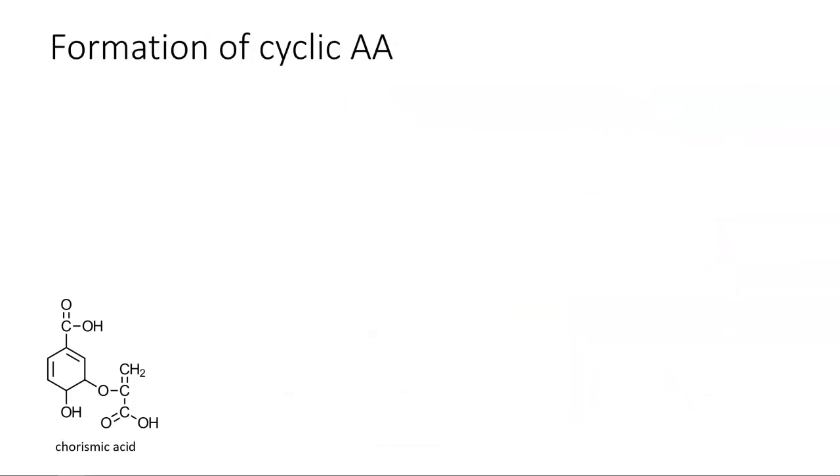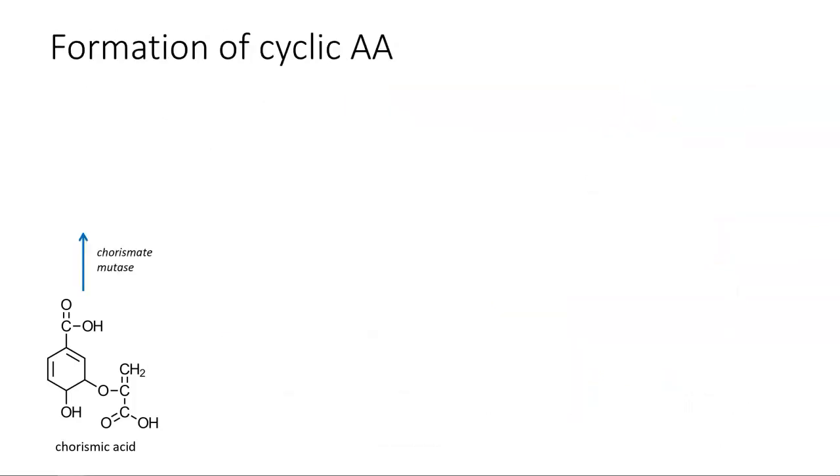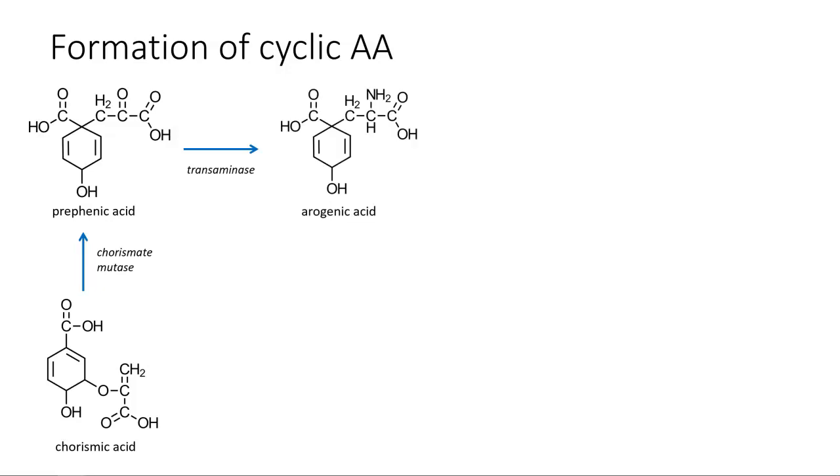The chorismic acid is modified into prephenic acid by the enzyme chorismate mutase. The prephenic acid is transaminated to produce arogenic acid. With the inclusion of nitrogen, this molecule is close to an amino acid.